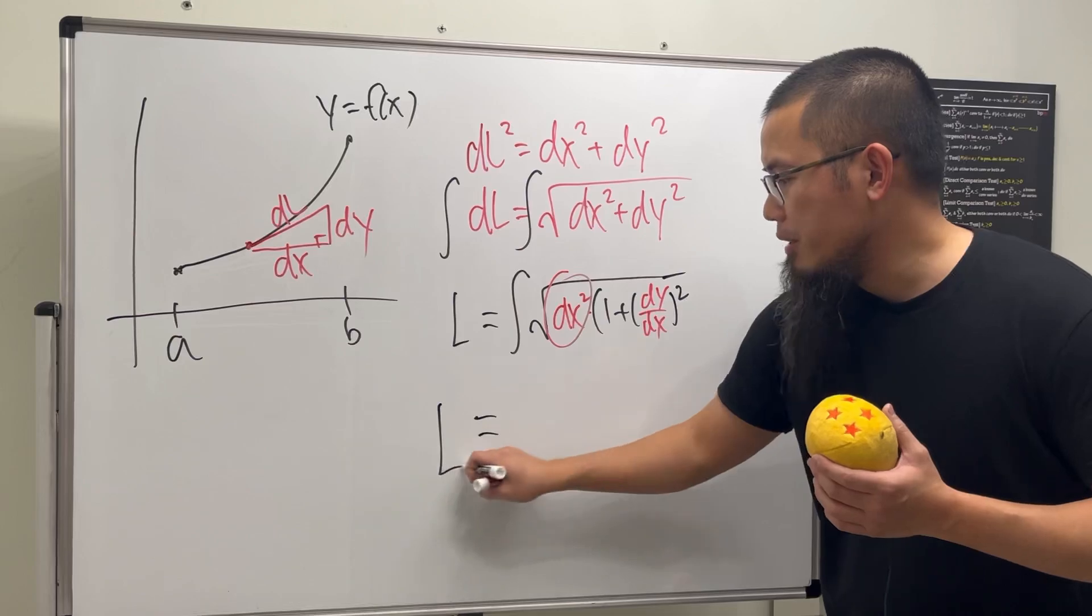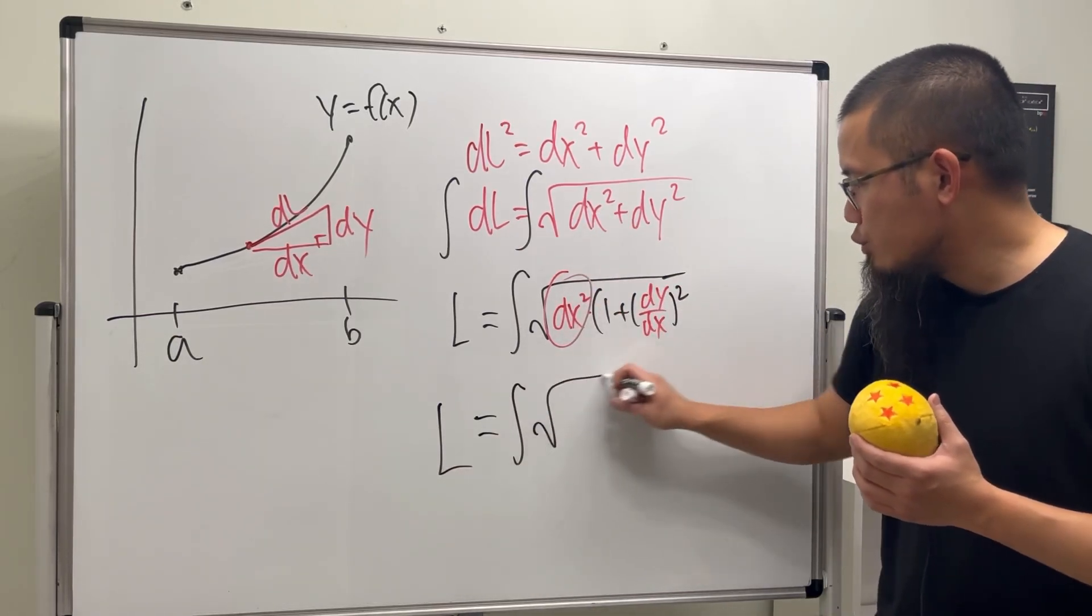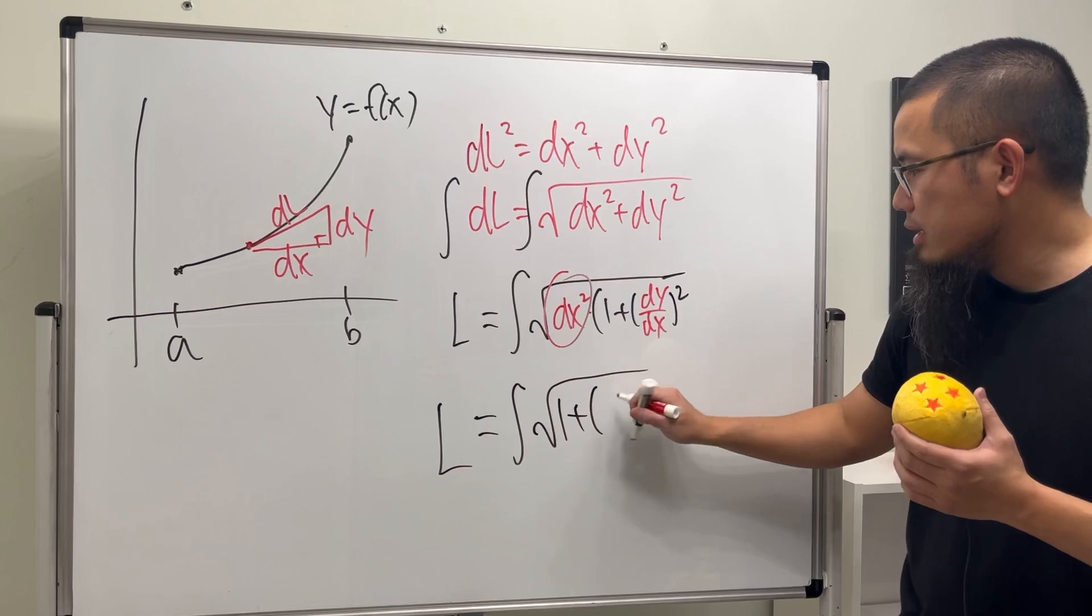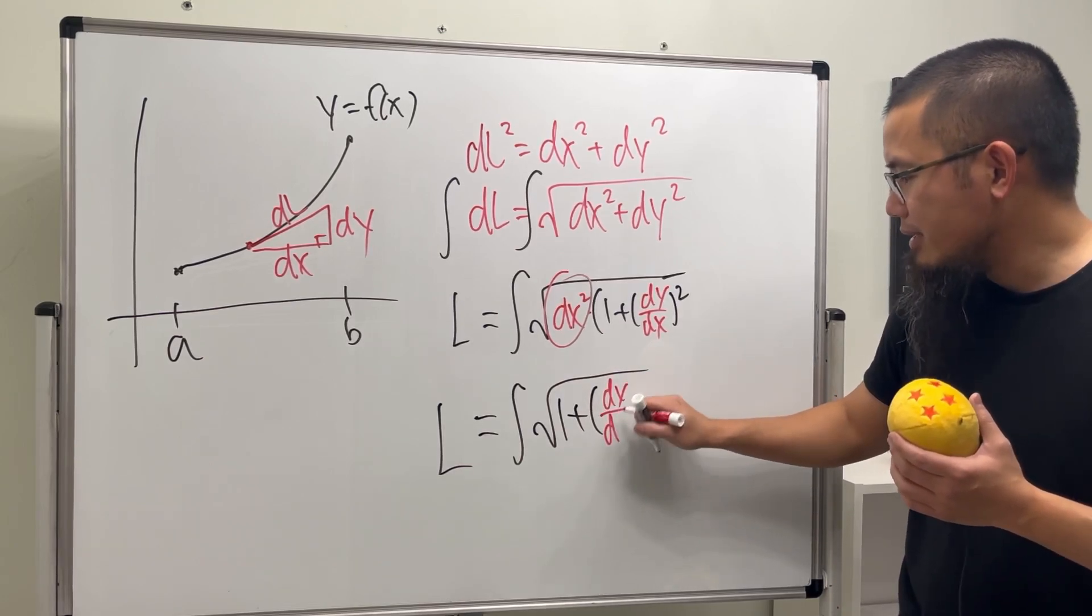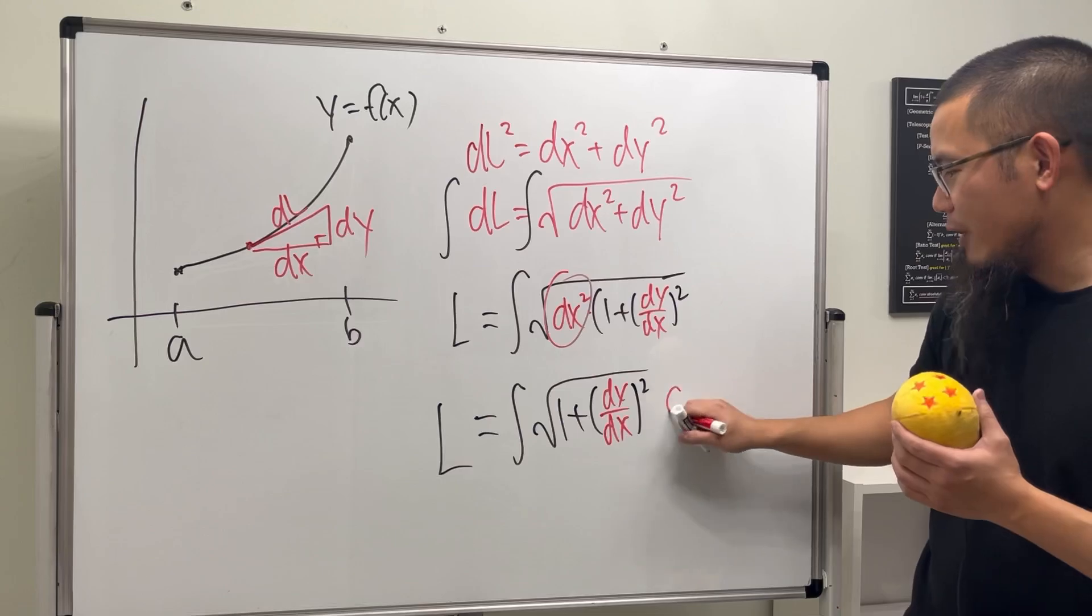So ladies and gentlemen, this right here becomes the integral of the square root of just this right here, namely 1 plus parentheses with DY DX inside, and then square, and then with the DX on the very outside.